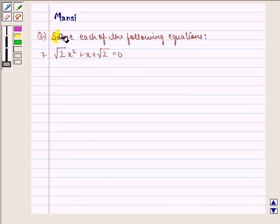In this question, we have to solve the equation √2x² + x + √2 = 0. Before starting with the solution, we see the key idea behind the question.